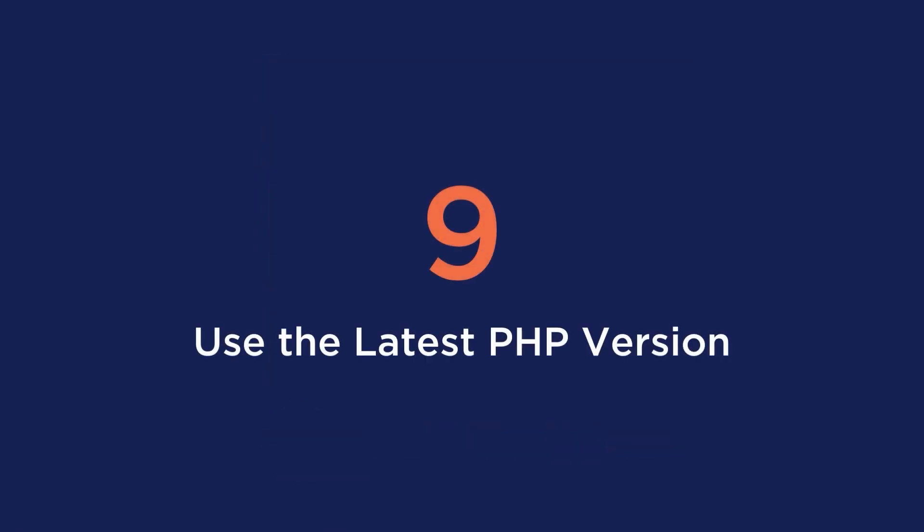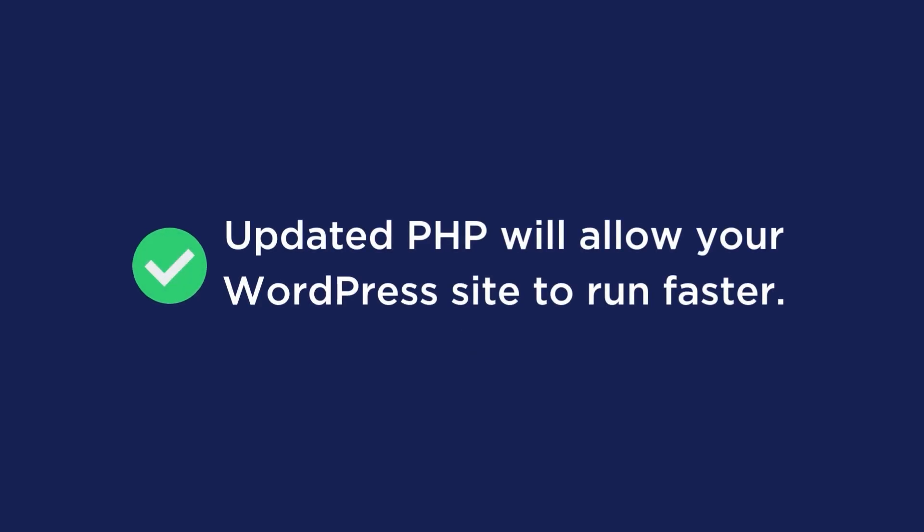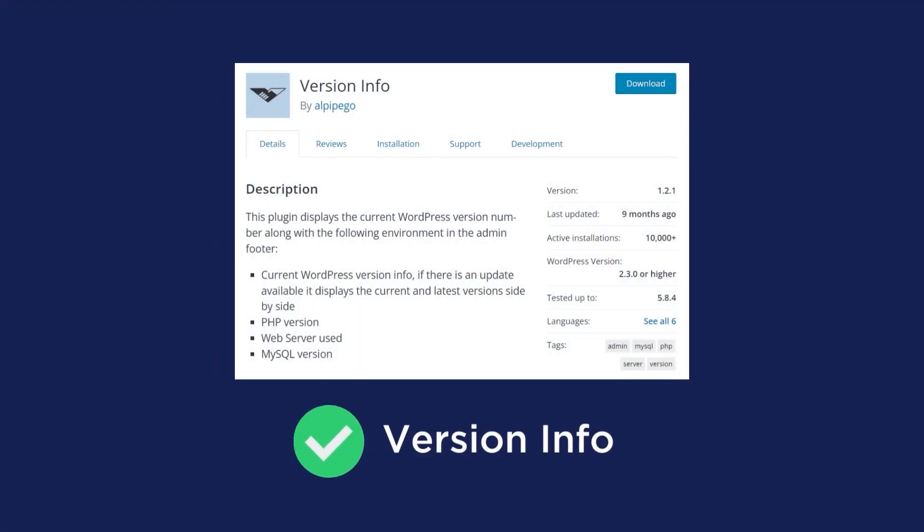For our last tip, make sure to use the latest PHP version. Quite simply, an updated PHP will allow your WordPress site to run faster. You can ask your host which version they are using and ask them to upgrade if they're using a lower version than PHP 7. You can also install a plugin like Version Info to check the PHP version you are currently using. Hopefully with the tips in this video, you were able to understand some of the more advanced ways to speed up your website. Check out the full article we wrote on this topic in the description below.